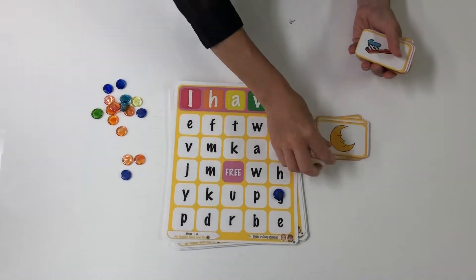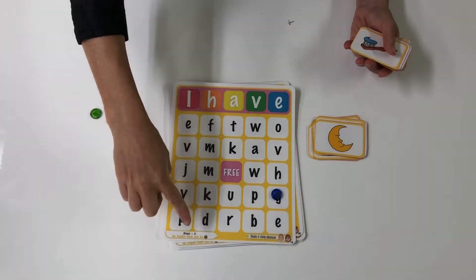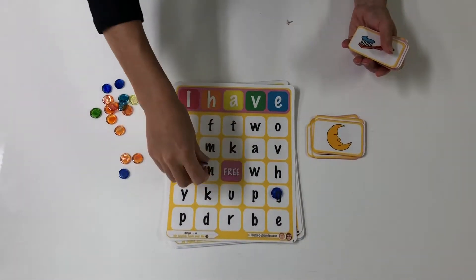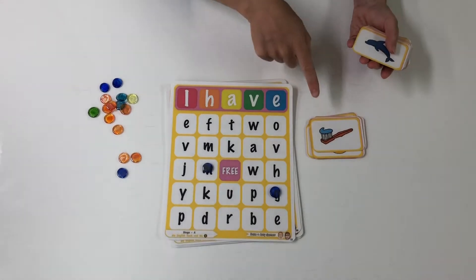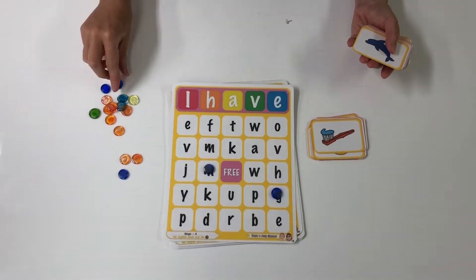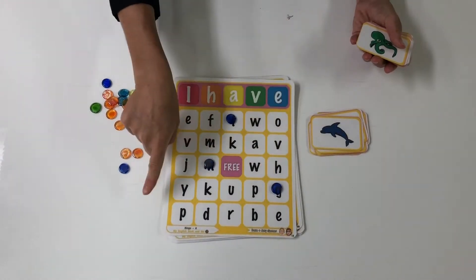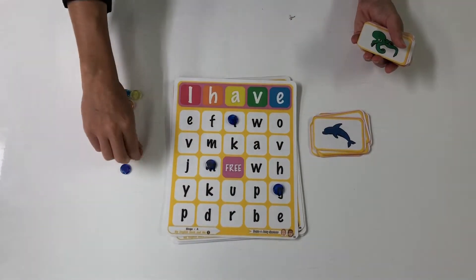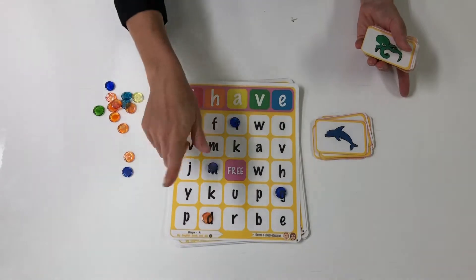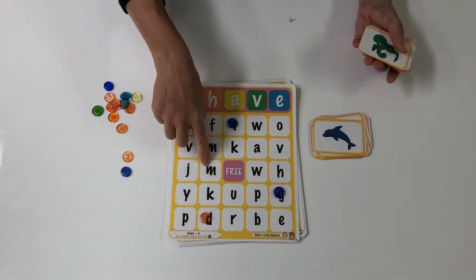Moon - I have a moon. Toothbrush - I have a toothbrush. Dolphin - I have a dolphin. Check: ma ma ma.